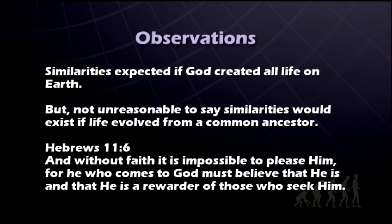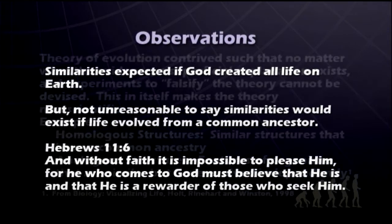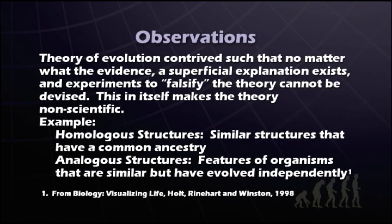Hebrews 11:6: 'And without faith, it is impossible to please him. For he who comes to God must believe that he is and that he is a rewarder of those who seek him.' The theory of evolution is contrived such that no matter what the evidence, a superficial explanation exists, and experiments to falsify the theory cannot be devised. This in itself makes the theory non-scientific. An example: homologous structures are defined as similar structures that have a common ancestry, while analogous structures are defined as features of organisms that are similar but have evolved independently.